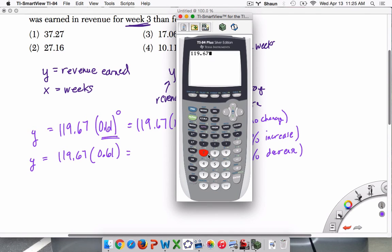119.67 times 0.61. So we've lost a percentage, we've lost 39%. So it's 72.9987. If we divide that by 119.67, you can see that it's 61% of what we had before.